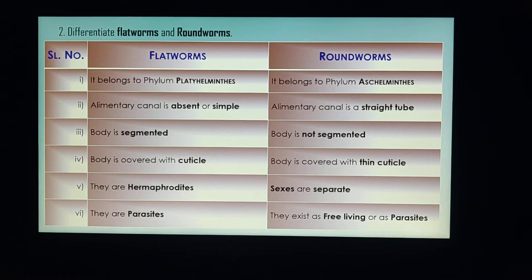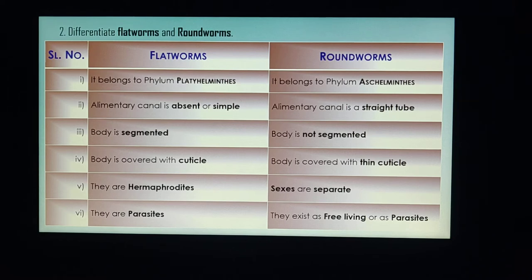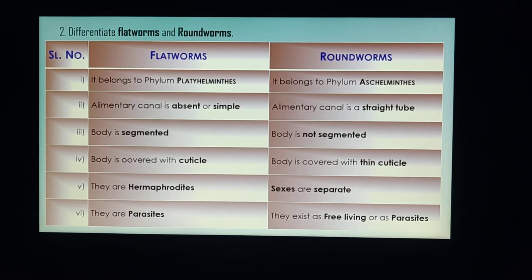Second four-mark question: distinguish flat worms from round worms. Flat worms appear flat like paper, whereas round worms appear round like a thread. All flat worms belong to phylum Platyhelminthes, whereas round worms belong to phylum Aschelminthes.